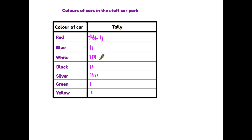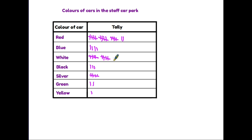Let's continue moving through the car park and adding more cars. We can see that the next white car is also going to be a line across — we have one, two, three, four, and the next car is white, so it goes across and makes a little gate picture. This is how we continue through the car park. We then have another red car, giving us another set of four lines, so the fifth one goes across. We can now count quickly and easily how many cars of each color.